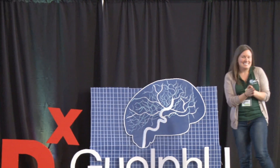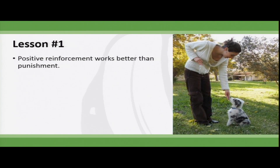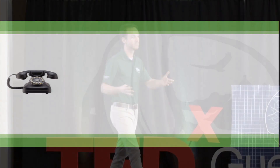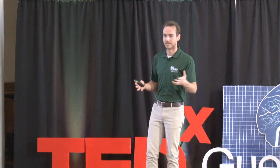Now that you have the basics and you're all expert animal trainers after two minutes of instruction, let's go through a few quick lessons. These lessons apply to the animals you may be training, but also to the people you may be training. So keep those ABCs in mind. Lesson number one: positive reinforcement works better than punishment. This is a big part of the evolution of animal training over the last few decades, as we've moved entirely away from punishment towards positive reinforcement.